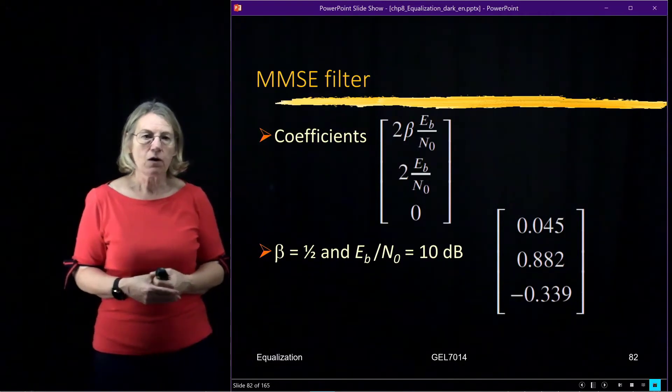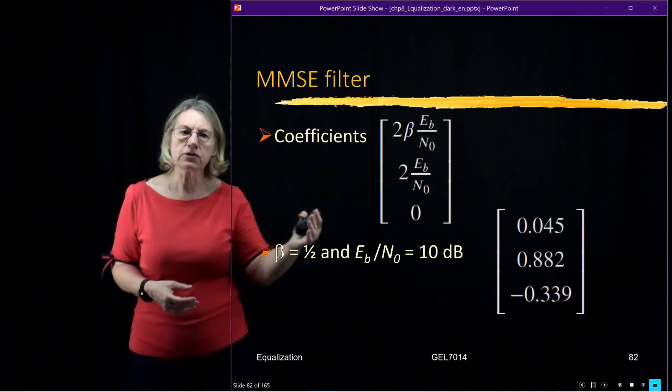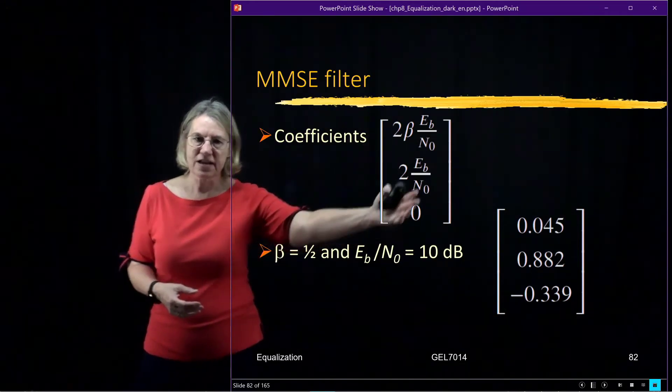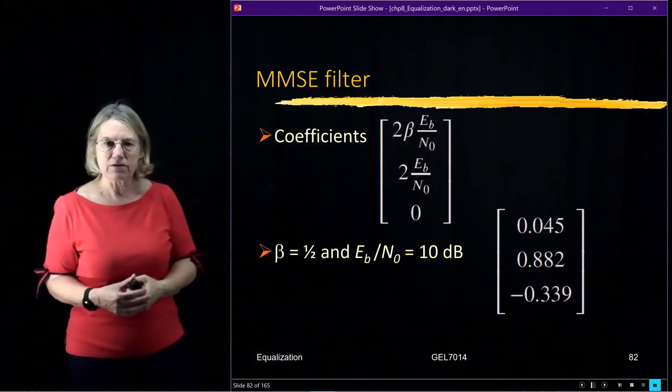So if we do that, we find that the coefficients for the MMSE filter are given by these expressions. It's based on what is this beta and what is the signal to noise ratio, ED over N0.